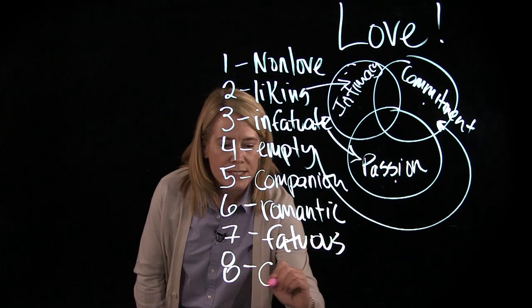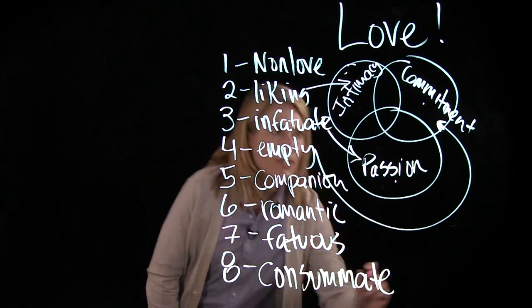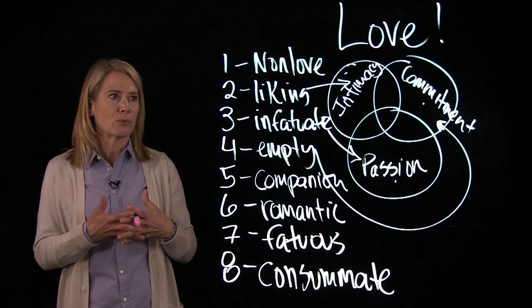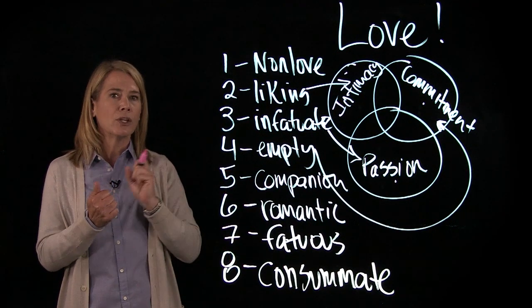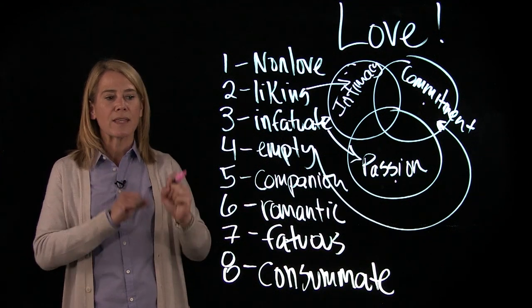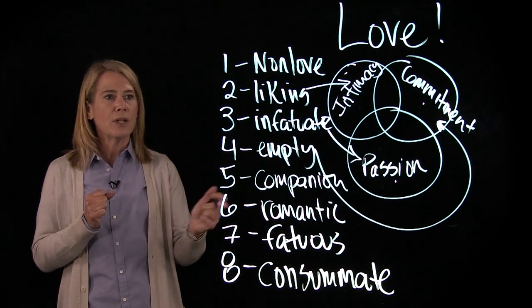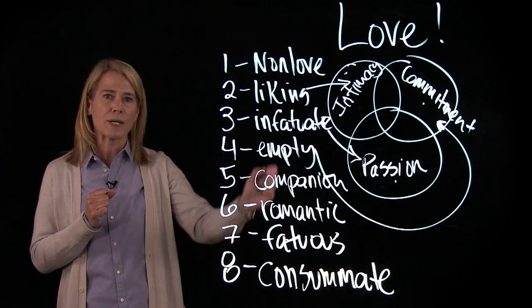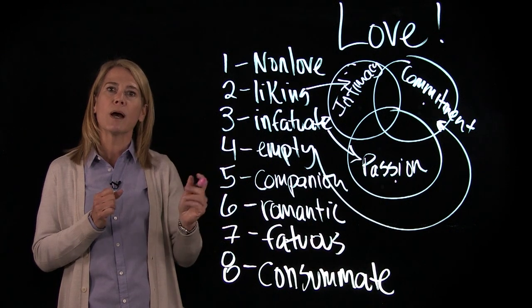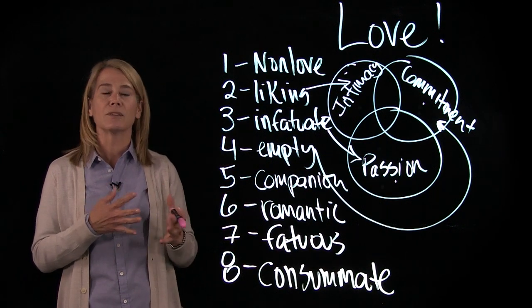And then the last one is consummate. And that's the gold standard. That's the presence of intimacy, commitment, and passion. It's got all of those three things. You know the person really well and you share their secrets. You're physically passionate and you have a long-term commitment. Now I will say that's consummate love. That's the gold standard in a Western situation. Not all societies, this is a very Western model. So when you think about the different kinds of love, think about what the ideal would be in another culture because this is relatively culture specific.